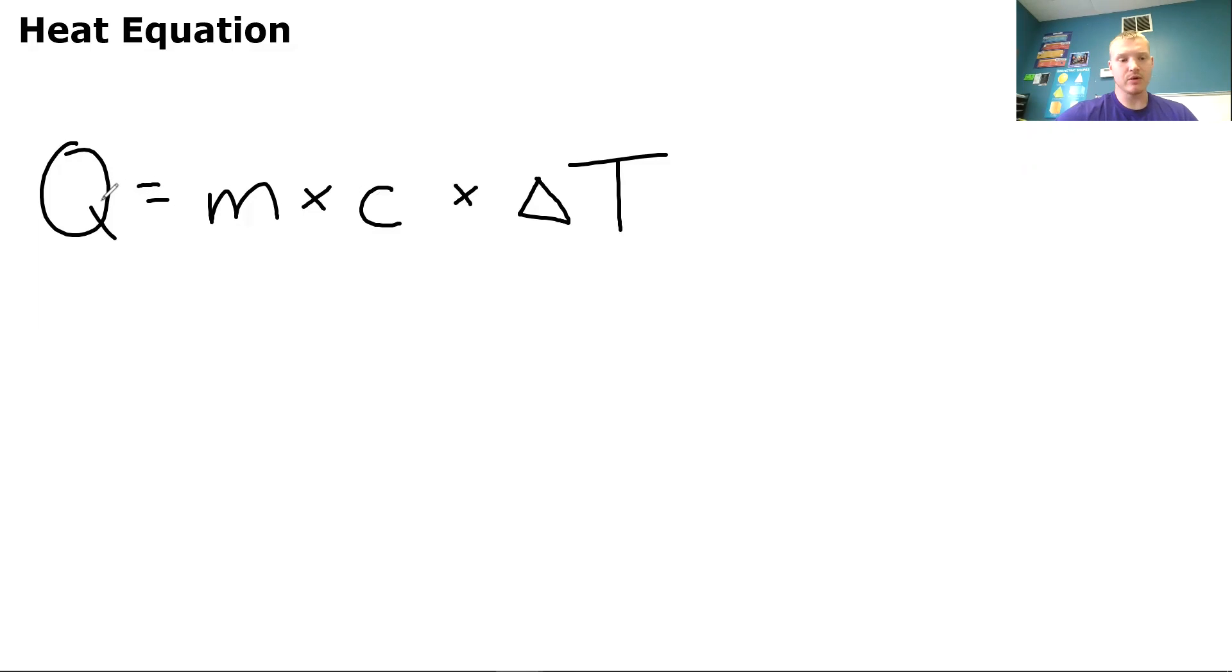So we have the letter Q. So Q equals M times C times this right here, that triangle. So that is delta. So delta T. So Q equals M times C times delta T. So what does all this mean?